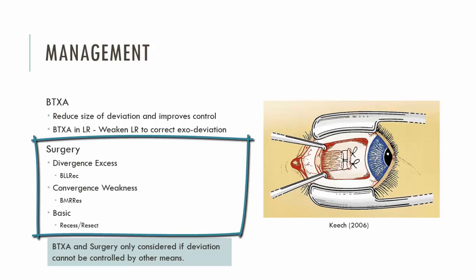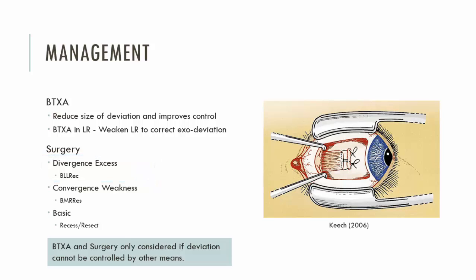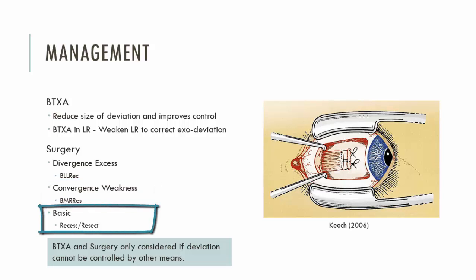Surgery may be an option where the deviation is relatively large and the patient remains symptomatic despite orthoptic or conservative treatment. The surgery prescribed would depend on the type of decompensating exophoria present. For a deviation greatest at distance or divergence excess, you would recess the two lateral recti. For a convergence weakness type of exodeviation, you would resect both medial recti. For a basic deviation, you could do unilateral surgery — recess the lateral rectus and resect the medial rectus.